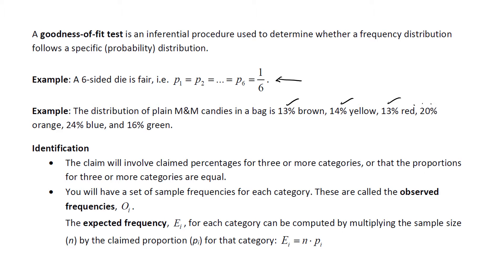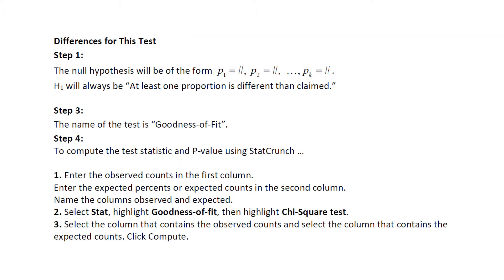StatCrunch will compute those expected frequencies for us. In the null hypothesis, it will always be of the form p1 equals a certain number, p2 equals a certain number, and so on. H sub 1 will always be that at least one proportion is different than claimed. That also means in the conclusion, there either will or will not be enough evidence to support that at least one proportion is different than claimed.